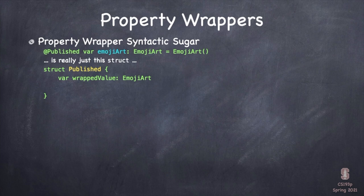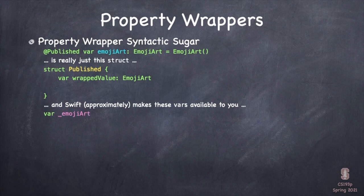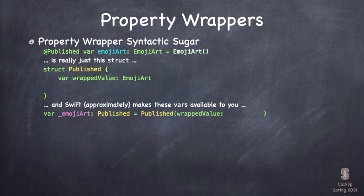Swift makes some other vars available to you as well. One of them is the underbar version of this EmojiArt var. Every time you do @Published EmojiArt or any at-sign something, you get an underbar version. The underbar thing is a var of type Published — that's the actual struct where all the code that does all the magic lives. It's initialized to create one of these Published structs with the starting value you provide.